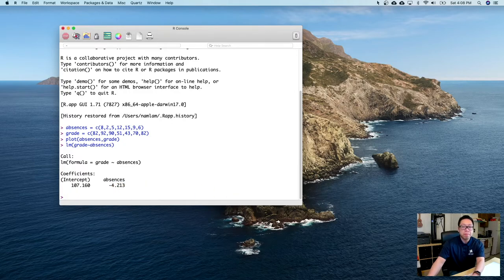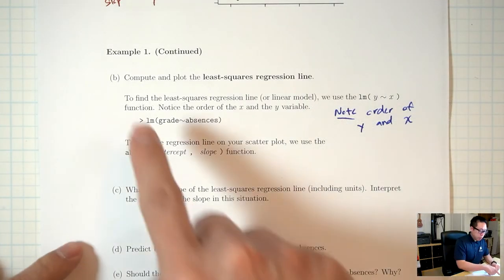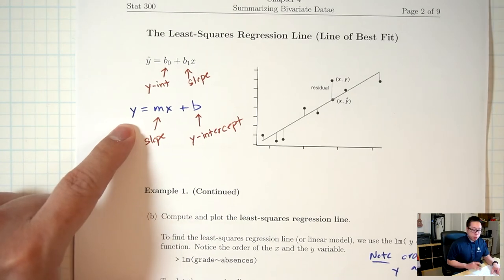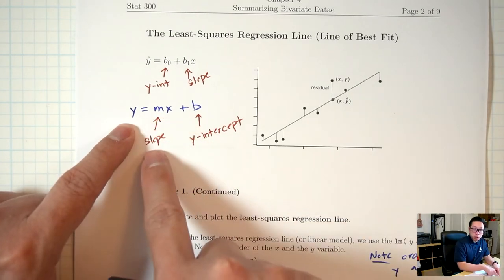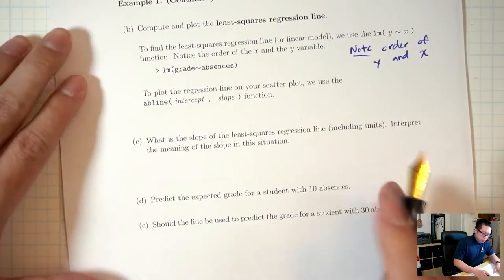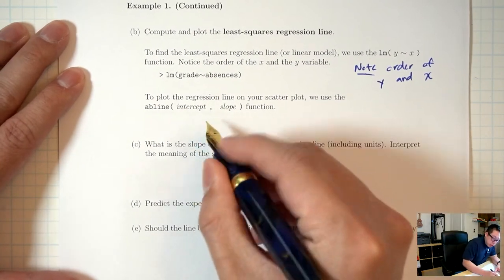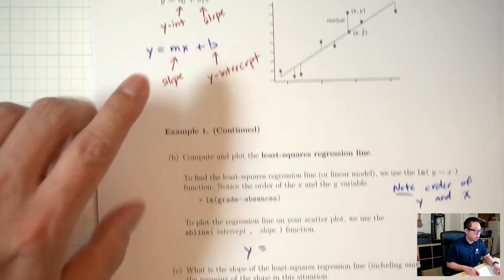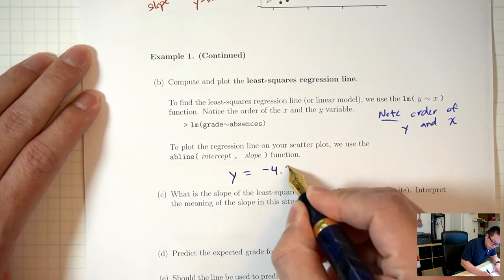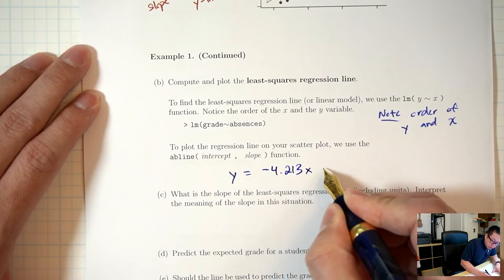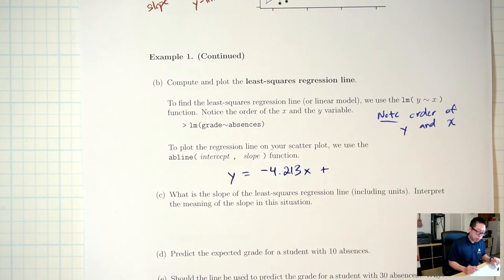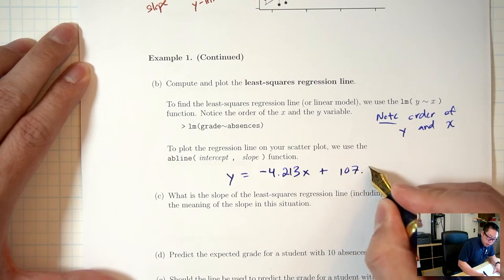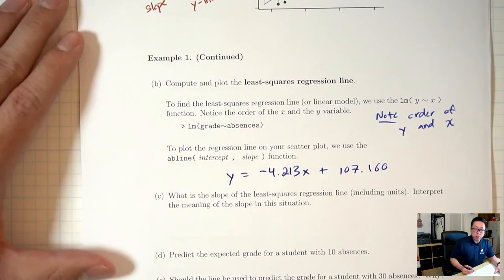Computing the least squares regression line means writing the y = mx + b equation with the slope substituted for M and the y-intercept for B. So our least squares regression line is y = -4.213x + 107.160.